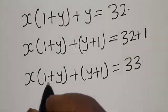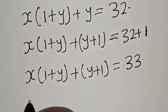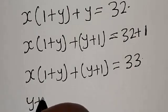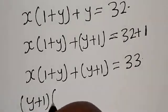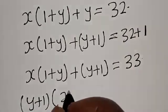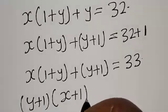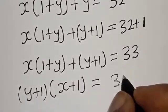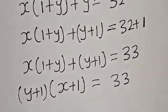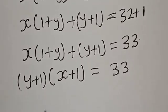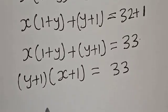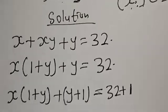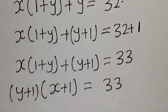Now one plus y is common here. We bring it out and factor, giving us one plus y multiplied by x plus one is equal to 33. Remember that x and y are positive integers.